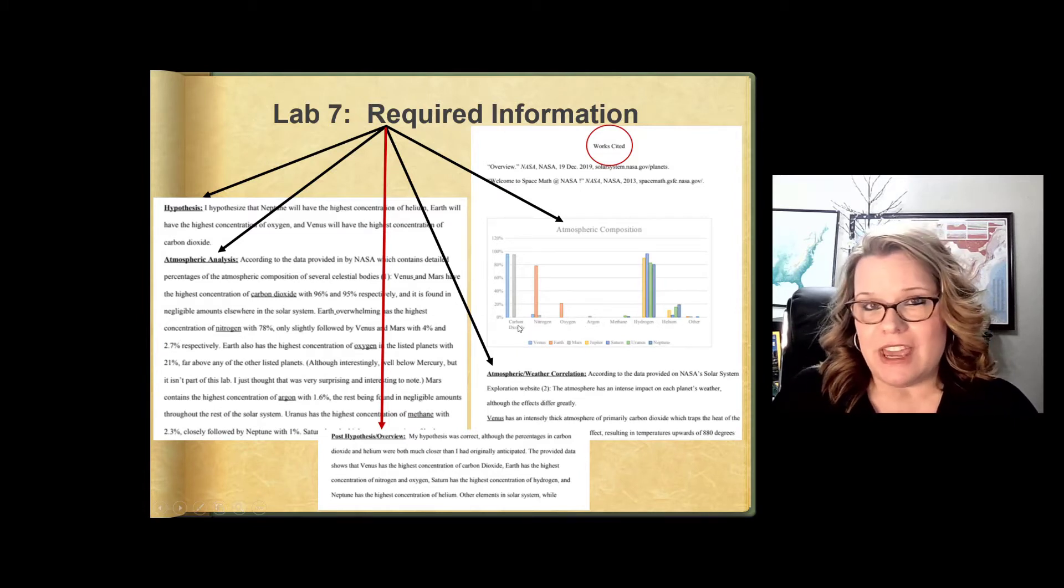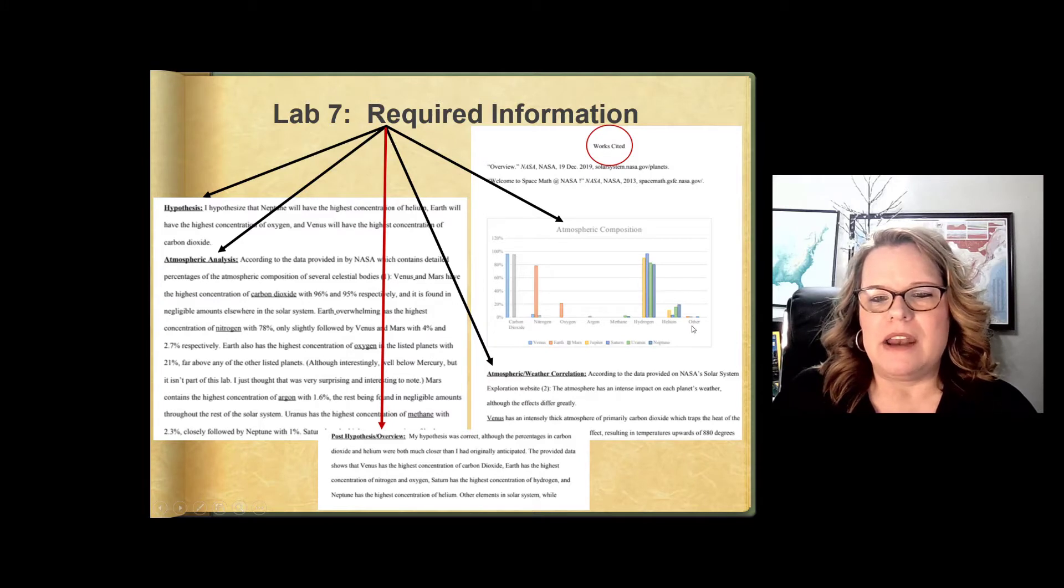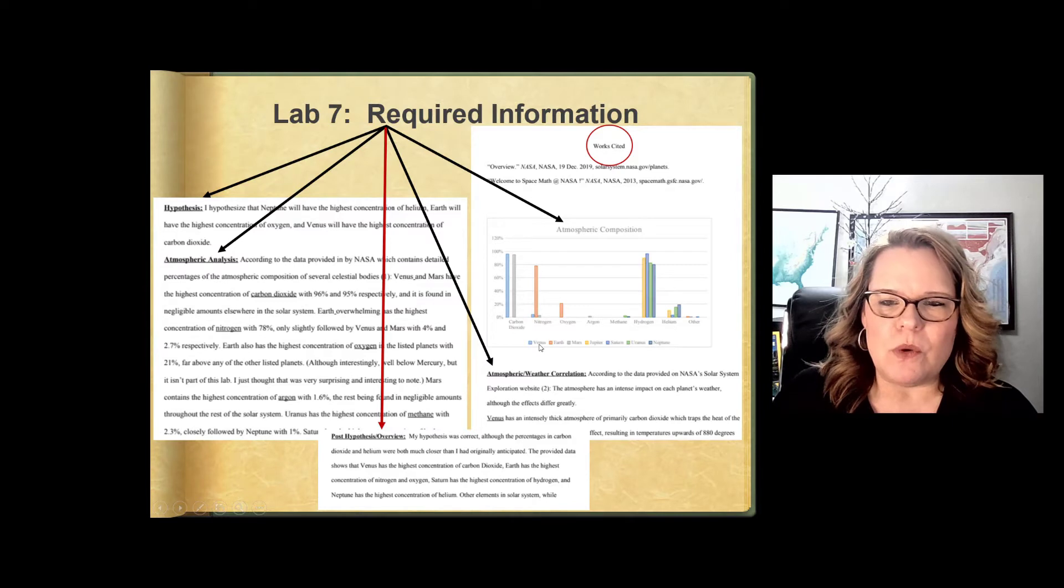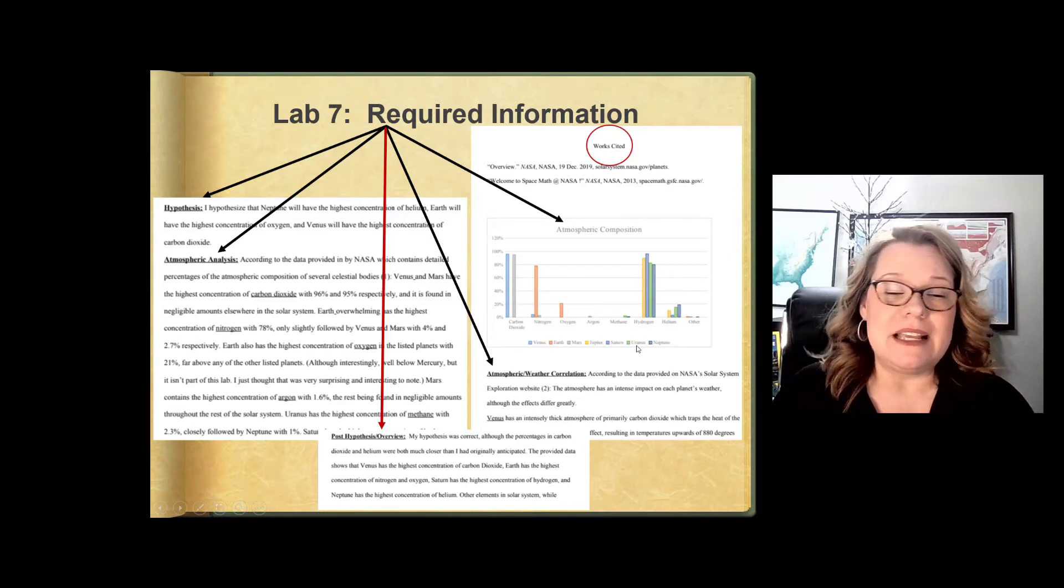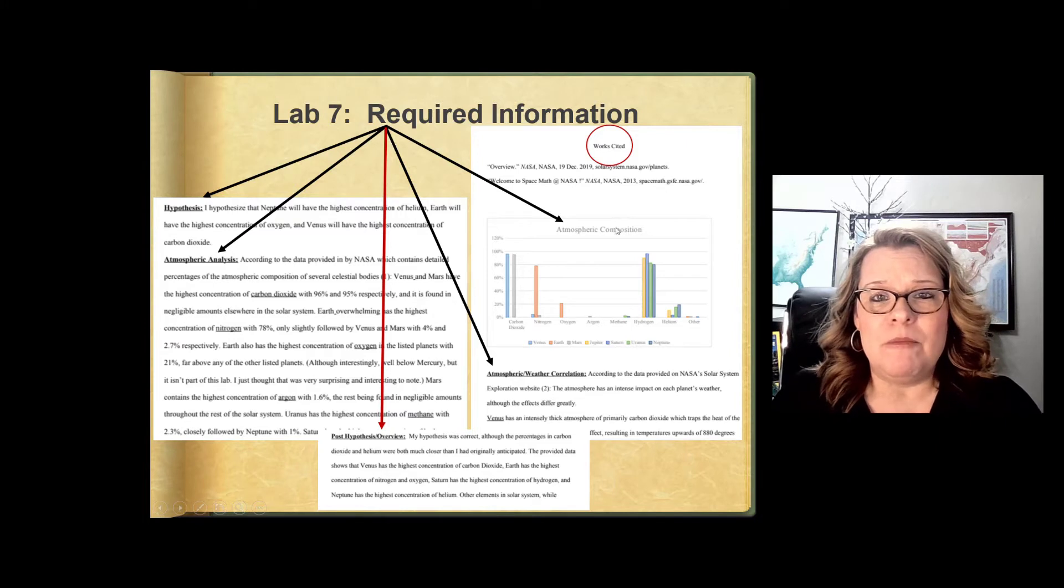That's all you're doing. So in this case, the student decided to itemize the gases on the X axis, the percentage on the Y axis, and then they produced a color for each of the planets. That's totally fine. But the key is that it's all on one particular chart graph.